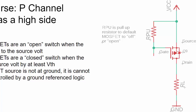A P-channel MOSFET operates almost opposite to an N-channel. It's open when the gate voltage is equal to or higher than the source. In this configuration, I have RPU — a pull-up resistor — so with VCC and the pull-up resistor, the gate is at the same potential as the source, meaning the switch is off or open. To turn it on, we need the gate to be more negative than the source by at least the threshold voltage. Since we're connected to VCC and not ground, it's harder to control the gate with a simple microcontroller logic level, as the floating high voltage could damage a microcontroller connected to the gate.